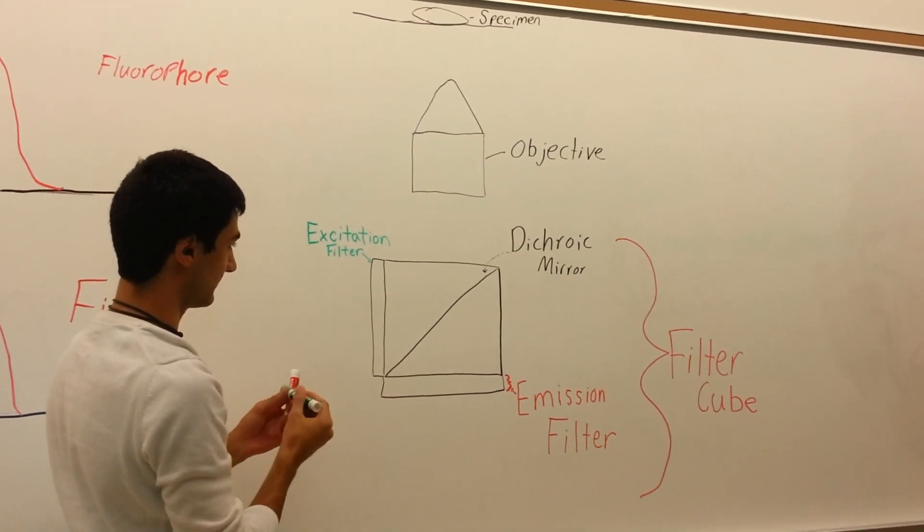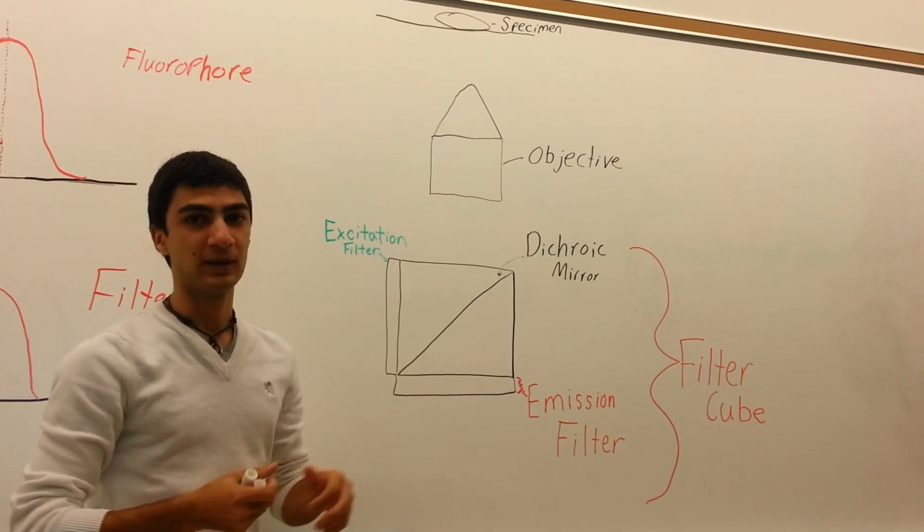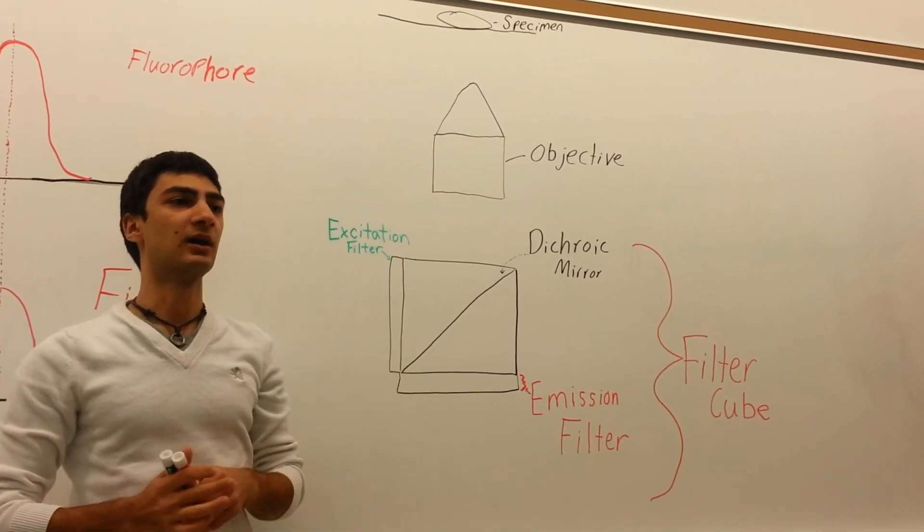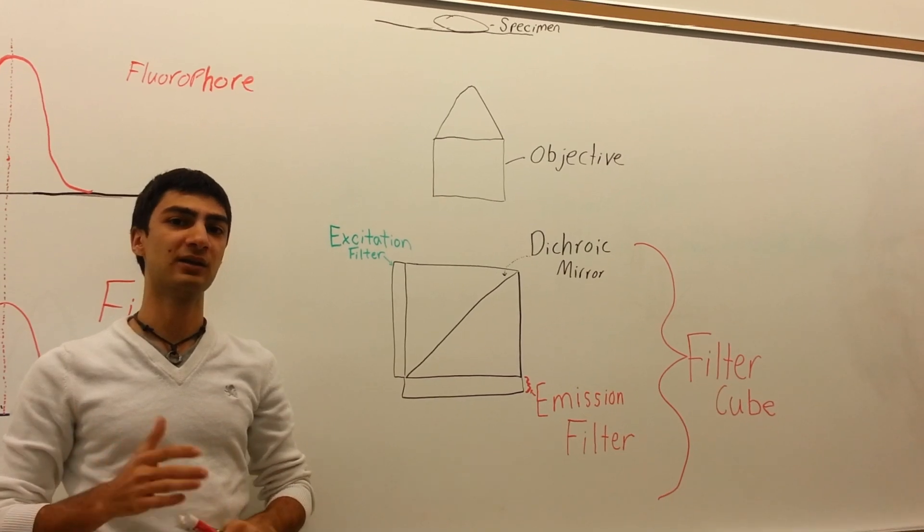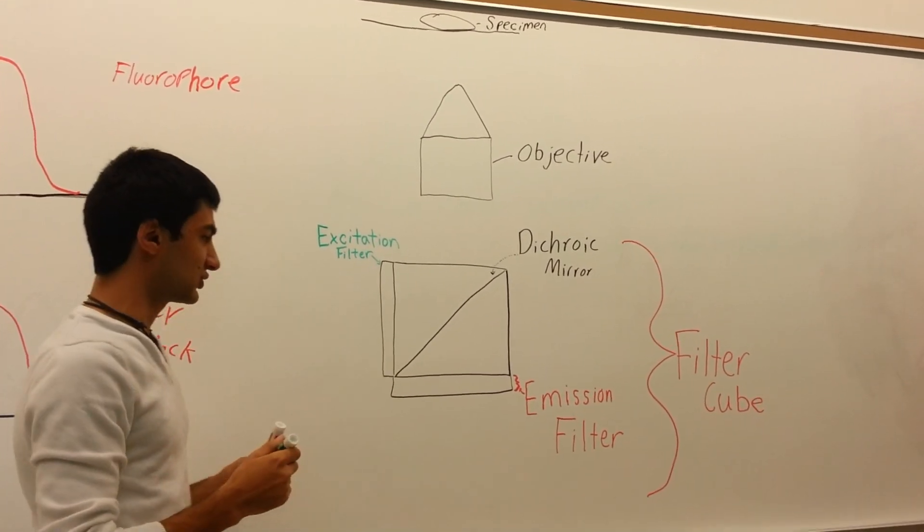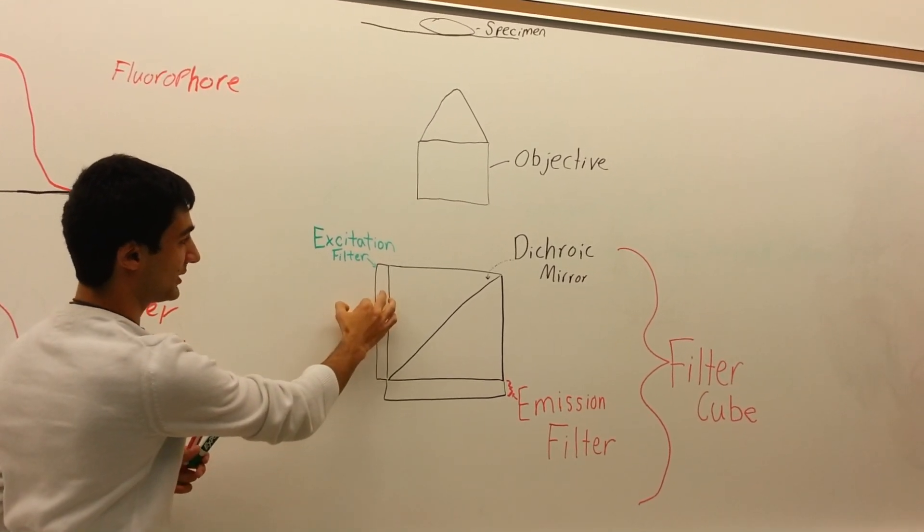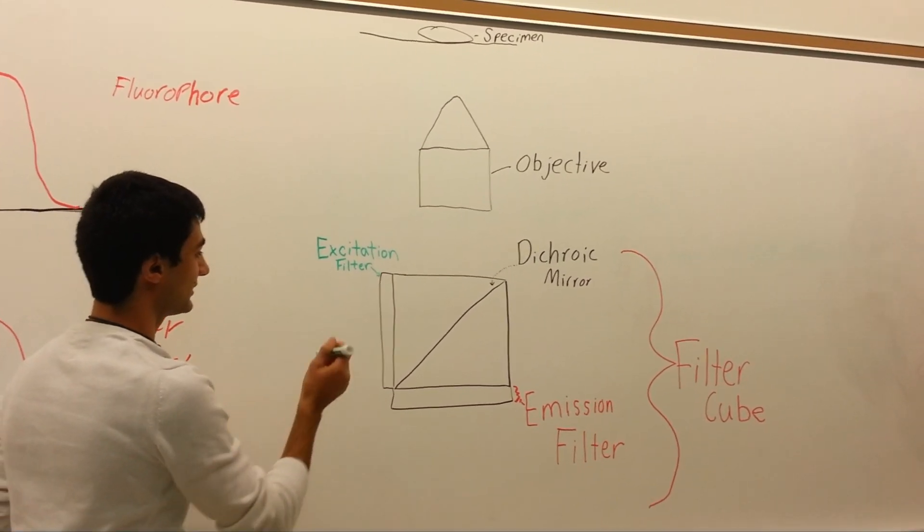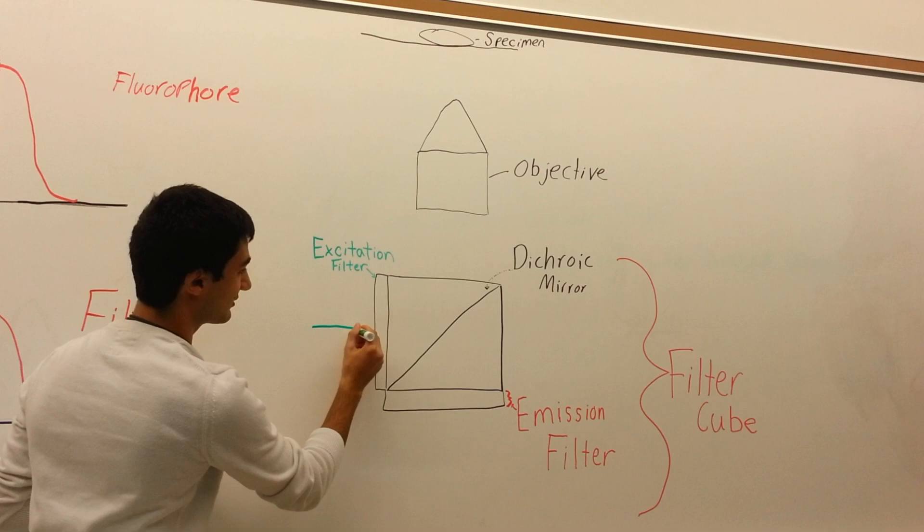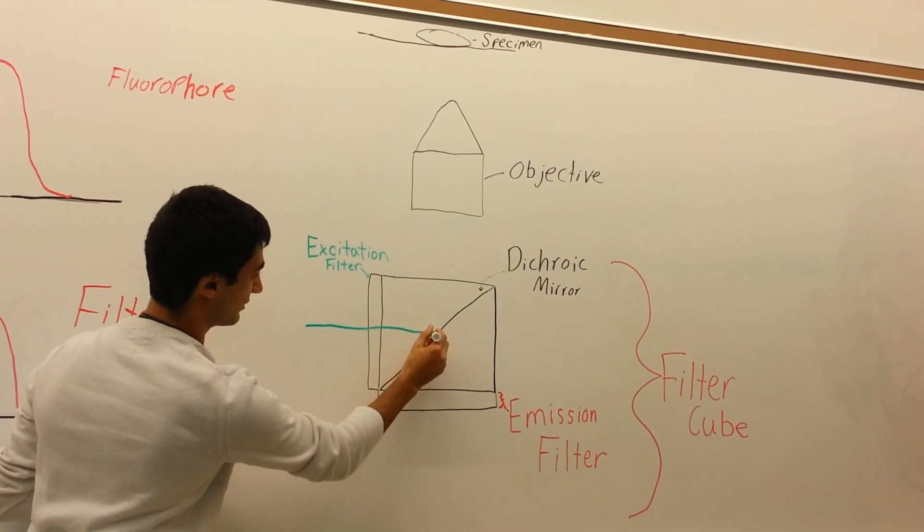Let's say, for example, that your specimen has a stain with a dye that requires green light to be excited at that wavelength. What happens is you are going to pick the appropriate excitation filter, in this case a green filter, that allows only green light to enter.